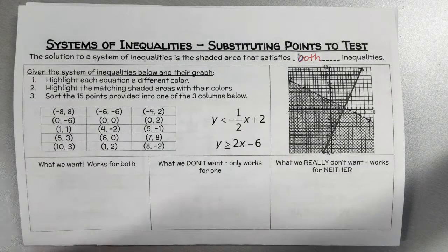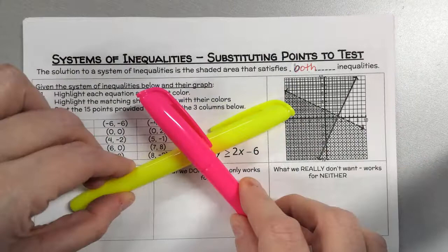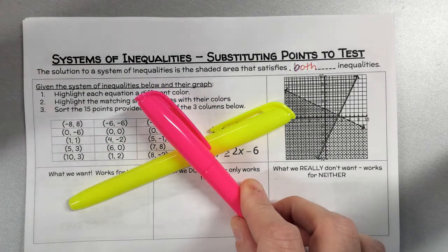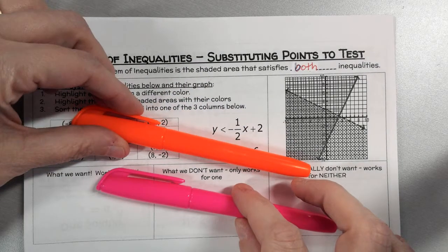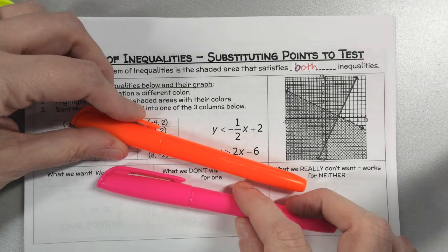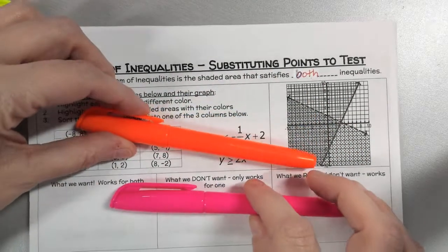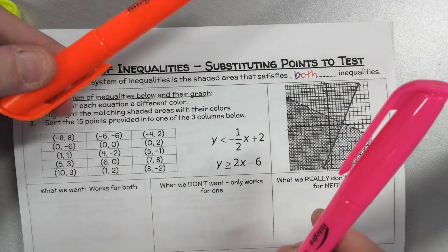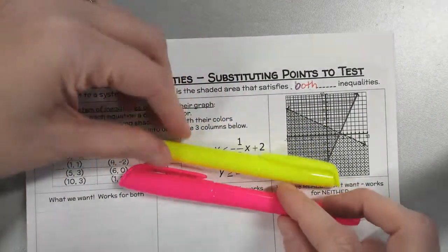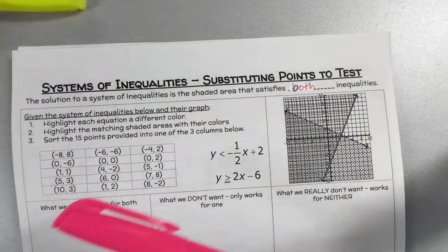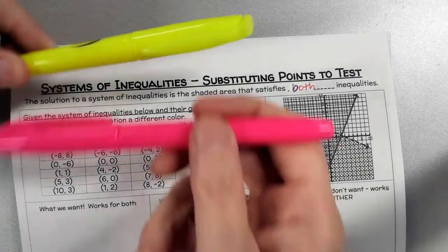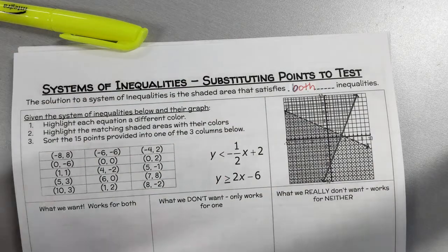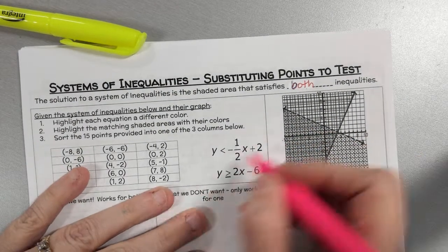What I'd suggest is using two highlighters that, when you put them together, make another color. Don't use orange and pink because they're too similar — you'll just get an orangey-pink. When you put pink and yellow together, they make orange, so try to make them a little different. I'm going to use pink and yellow.